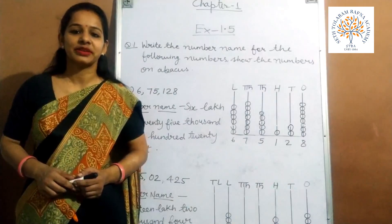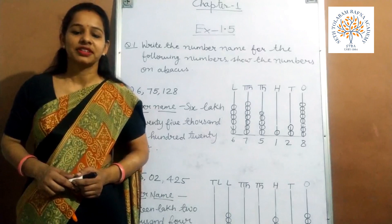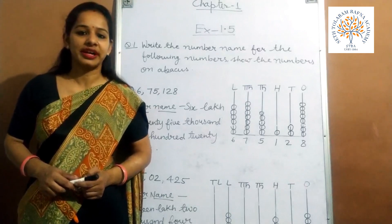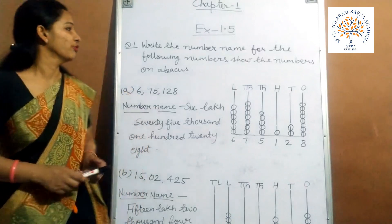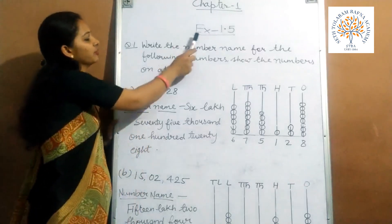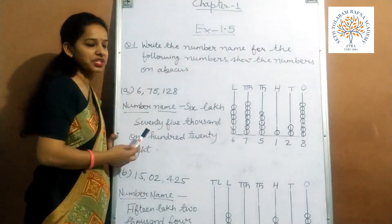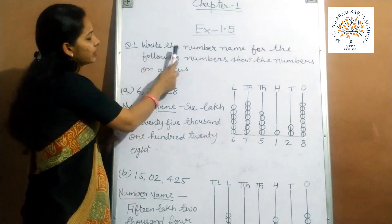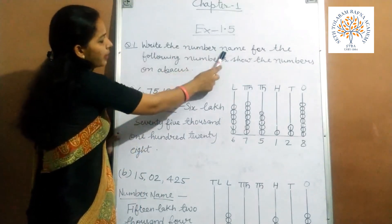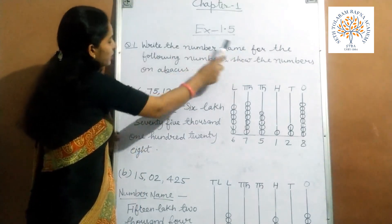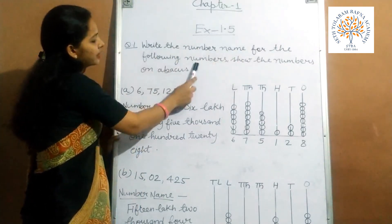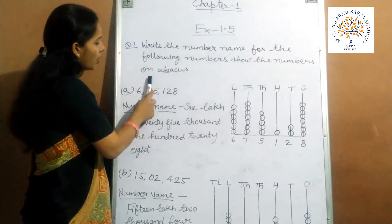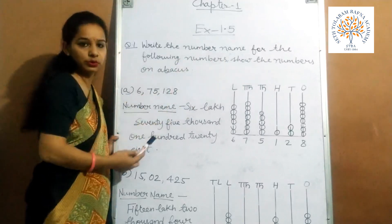Hello students, good morning. Today we are going to start exercise 1.5. So question number 1: write the number name for the following numbers. Show the number on abacus also.